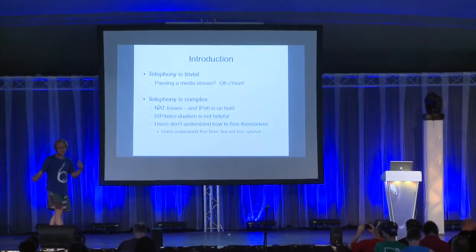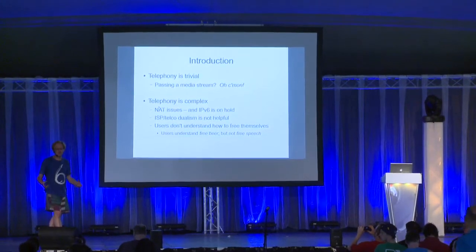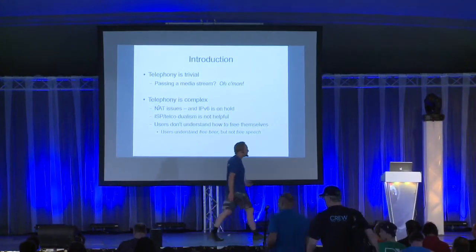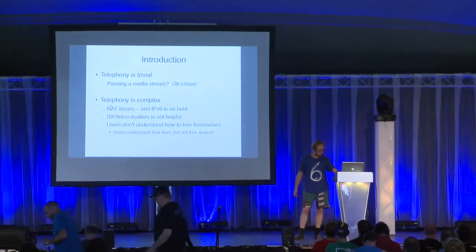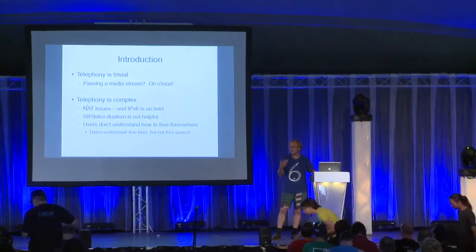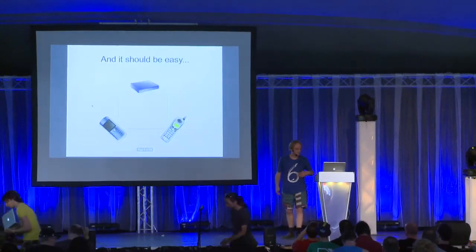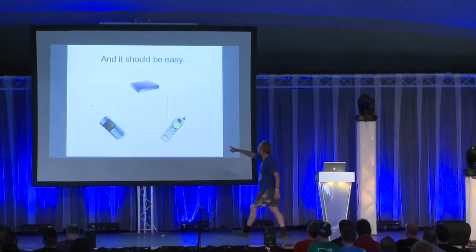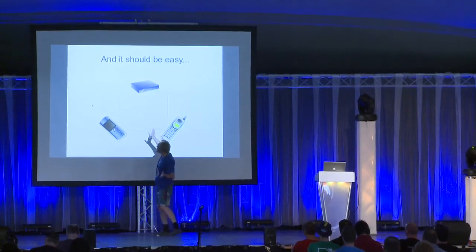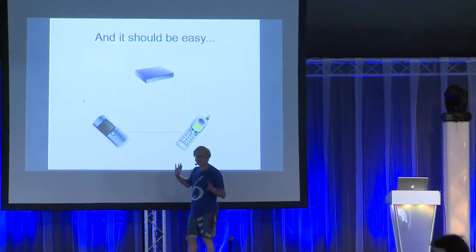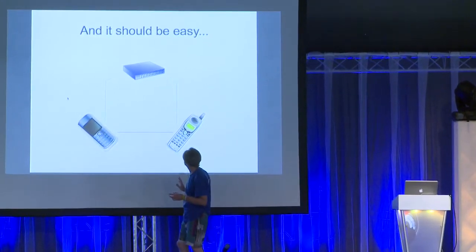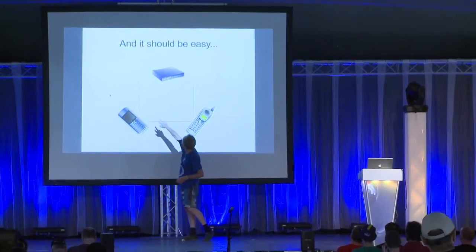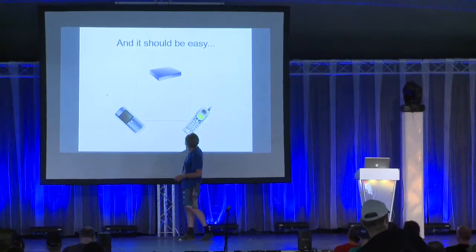Users don't understand how to free themselves. You can explain they could call for free, but they'll grasp the free beer aspect, not the free speech aspect. You have to show that you're available for telephony at your email address and they'll understand it. What's the problem with NAT? You have two phones talking to some sort of PBX. One phone connects to the PBX, says it has an invitation, the other picks it up, they've exchanged media stream information, and they will directly exchange traffic.